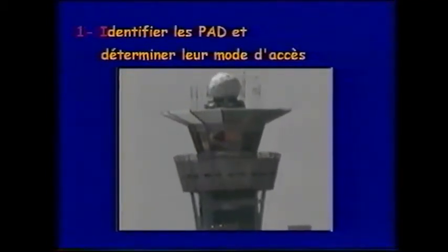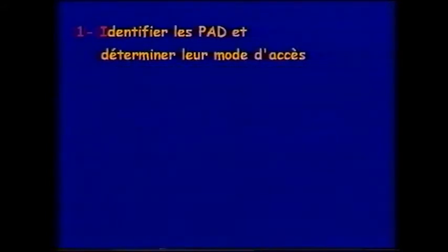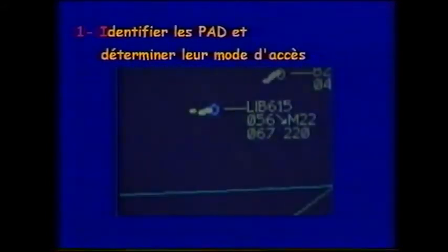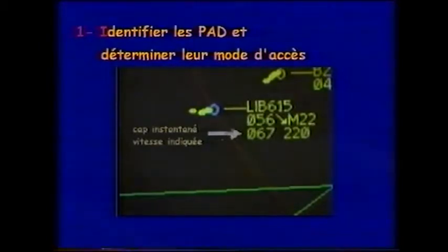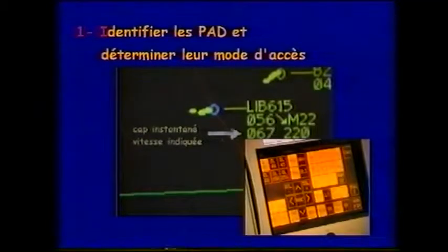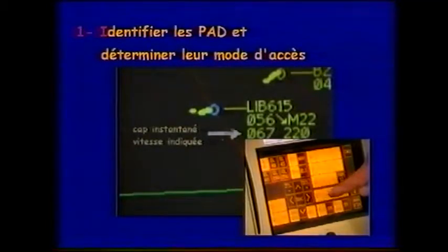Elle a permis d'établir une liste de PADs potentiellement utiles aux contrôleurs d'approche. Le cap instantané de l'avion et la vitesse indiquée à bord ont été jugés prioritaires et apparaissent sur la troisième ligne de l'étiquette radar, tant que le contrôleur maintient l'appui sur une touche dédiée à cette fonction.